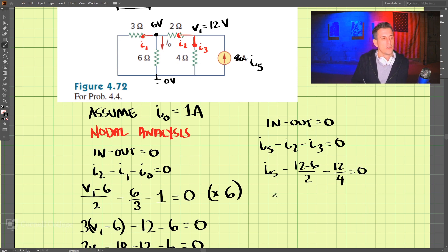So we have is equals 3 plus 3, that's 6 amps. What we solved for was this source equals 6 amps by assuming that i0 is 1 amp.